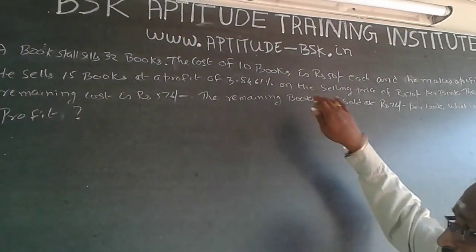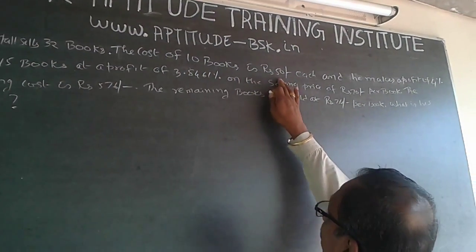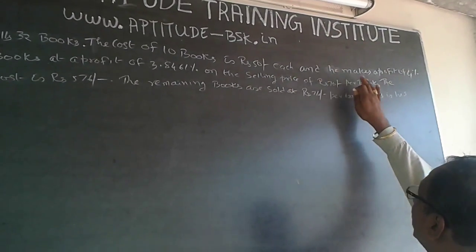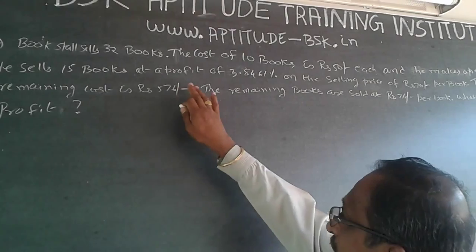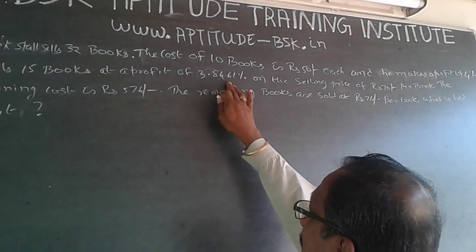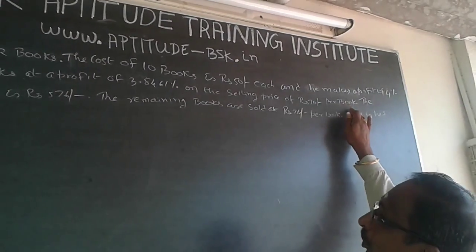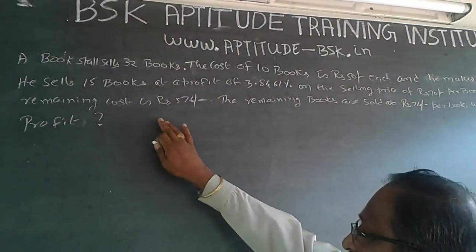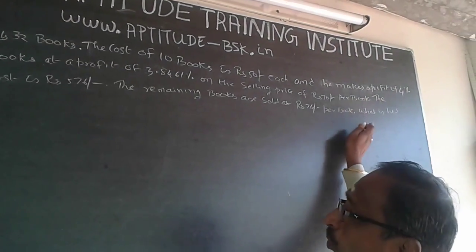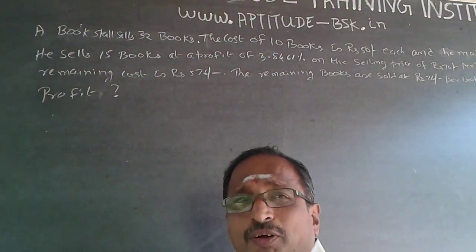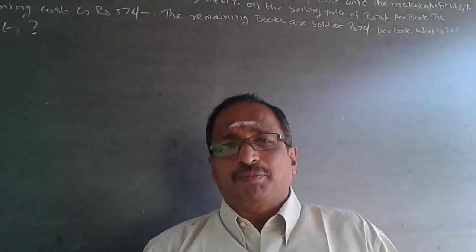The question is: a bookstall sells 32 books. The cost of 10 books is roughly 50 each and he makes a profit of 4 percent. He sells 15 books at a profit of 3.8461 percent on the selling price of Rs. 70 per book. The remaining cost is Rs. 576. The remaining books are sold at Rs. 74 per book. What is his profit? This is a question on cost price, selling price, and profit.